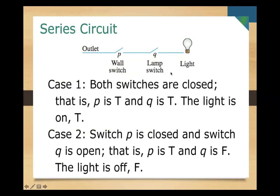In the series case, if both switches are closed, the light is on. Since both are closed, the energy can pass through the wire. Case one: p is true and q is true, the light is on — true. Case two: switch p is closed and switch q is open — p is true and q is false — the light is off, so false.